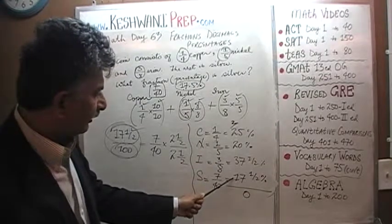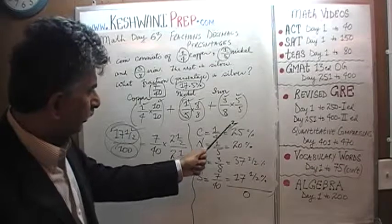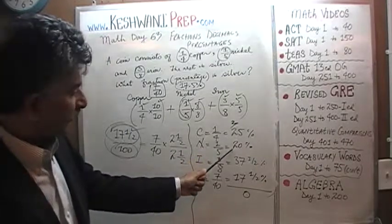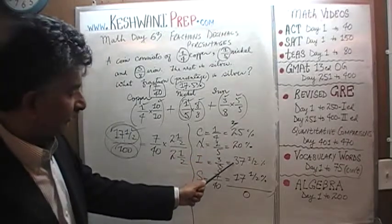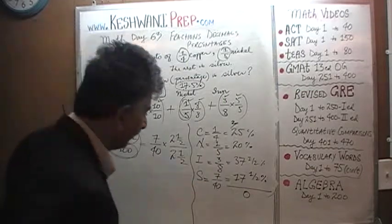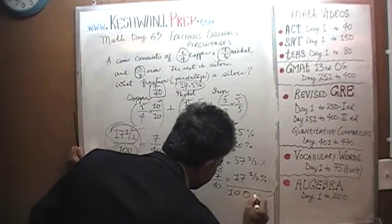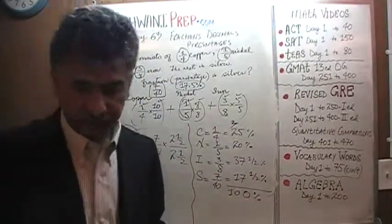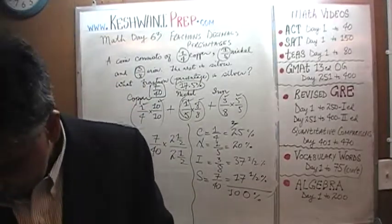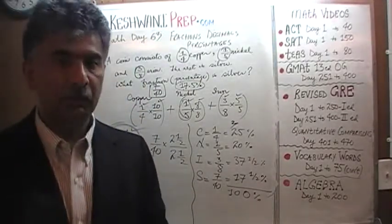6 plus 3 is 9 and then 1, 10. It turns out that our answer is correct. 17.5% is correct because it adds up to exactly 100%.